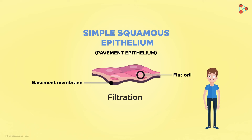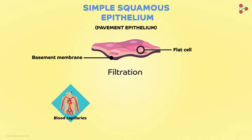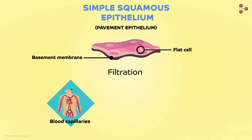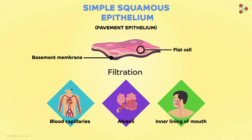Where do we find them? Think of the thinnest surfaces in our body: the lining of blood capillaries, the lining of alveoli, and also the inner lining of the mouth.